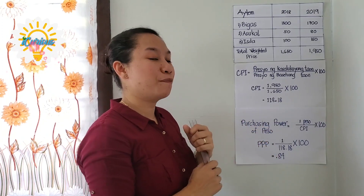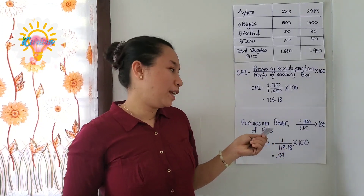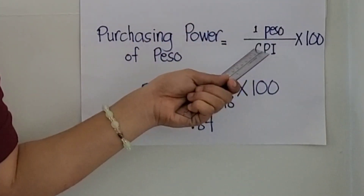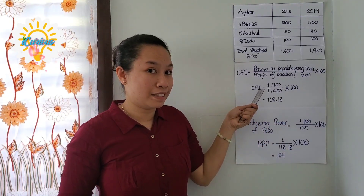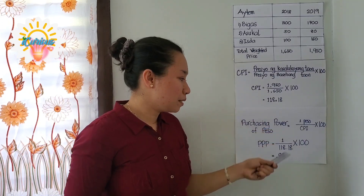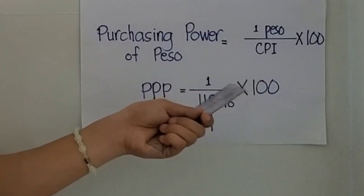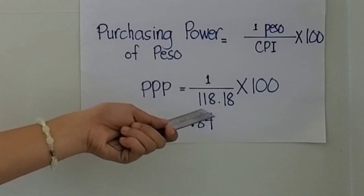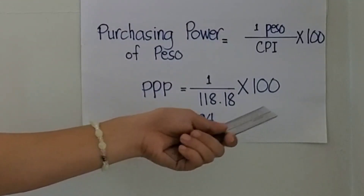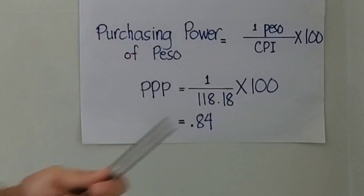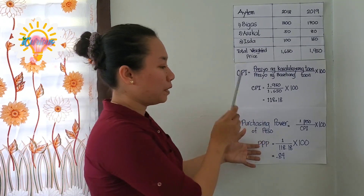Meron na tayong consumer price index, kaya ating i-compute na ang purchasing power of peso. Ang formula na ating gagamitin ay: 1 peso divided by the consumer price index na nakuha natin, which is 118.18. I-divide natin ang 1 peso sa 118.18, times 100. Ang magiging sagot ay 0.84 cents.